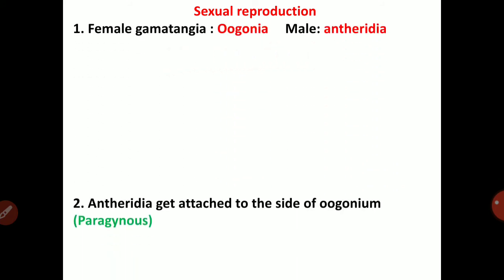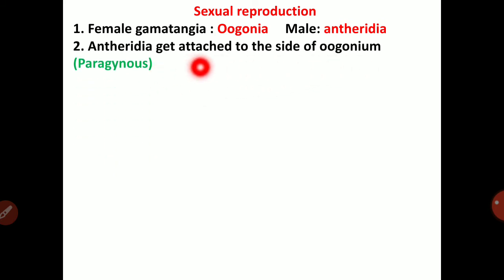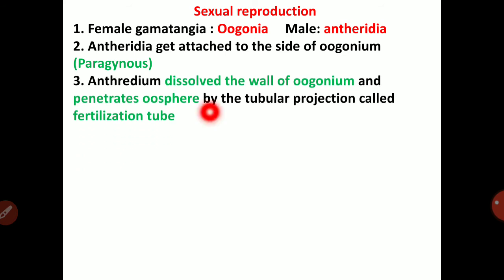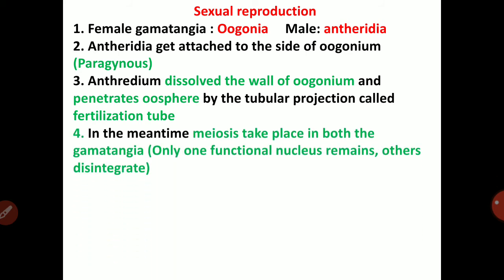In sexual reproduction, female gametangia is oogonium and male gametangia is antheridia. Antheridia get attached to the side of the oogonium; that is paragynous antheridium. The antheridium dissolves the wall of the oogonium and penetrates the oosphere by a tubular projection called the fertilization tube. Meiosis takes place in both gametangia, and only one functional nucleus remains; others disintegrate.